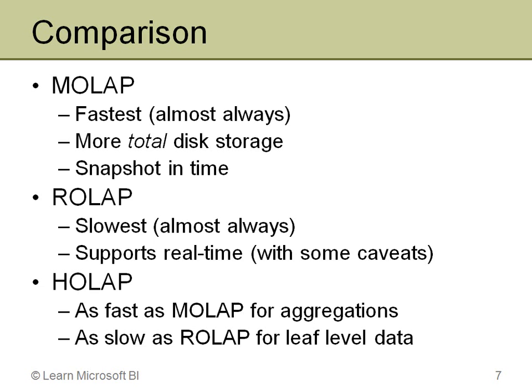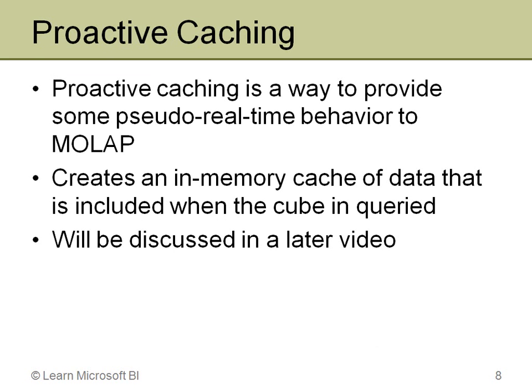ROLAP has the advantage of being real-time but the disadvantage of being slower. The indexed views it uses for aggregations don't physically store data, so aggregations have to be calculated at query time, which contributes to slower performance. As for HOLAP: if a user is at a higher aggregation level, it performs the same as MOLAP because the aggregations are stored in a MOLAP structure. But when the user drills down to leaf-level fact granularity, it falls back to ROLAP speed.